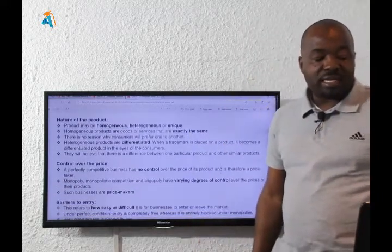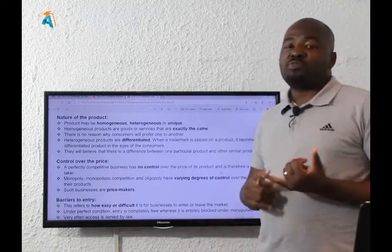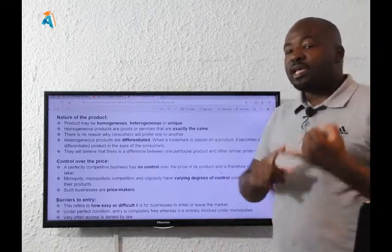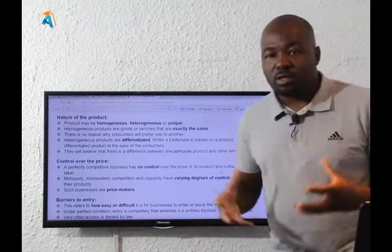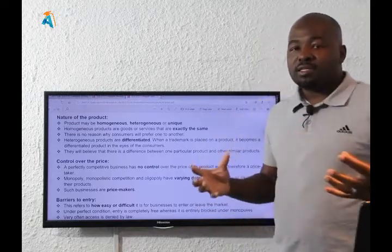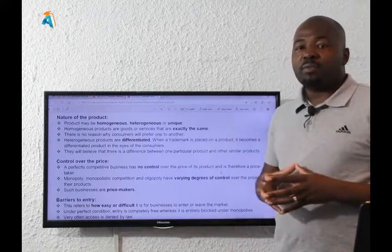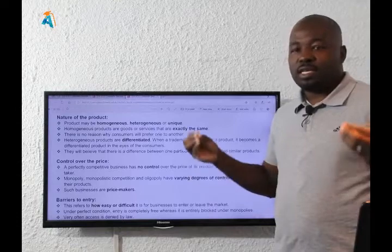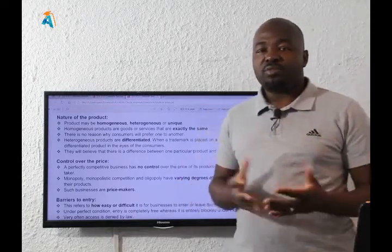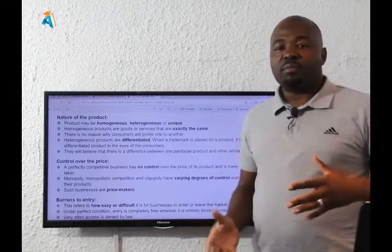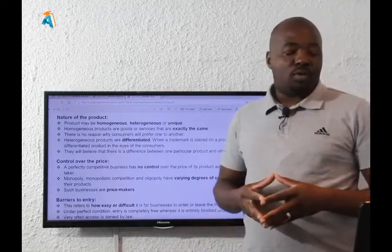Next, we look at the nature of product. A product can either be homogeneous — that means identical or standardized. Maize is a good example. If it's not white, it's yellow, and you can't really tell the difference between maize from Zimbabwe and maize from Malawi. Maize is just white.